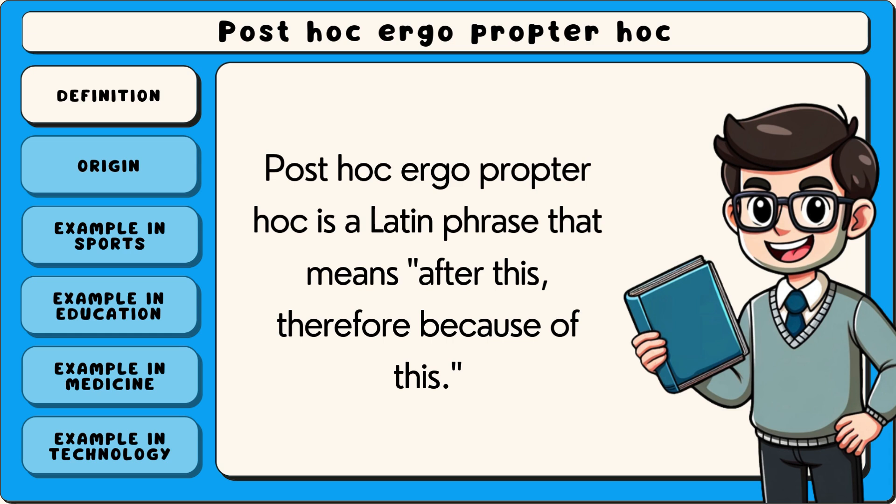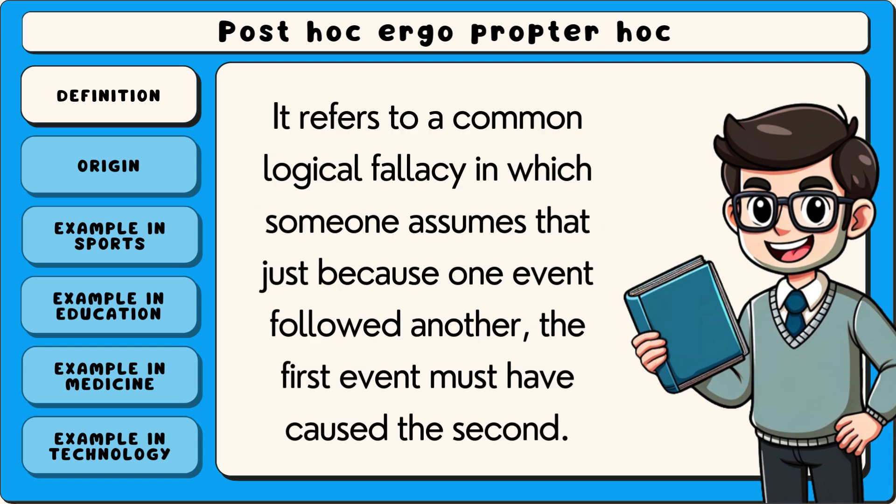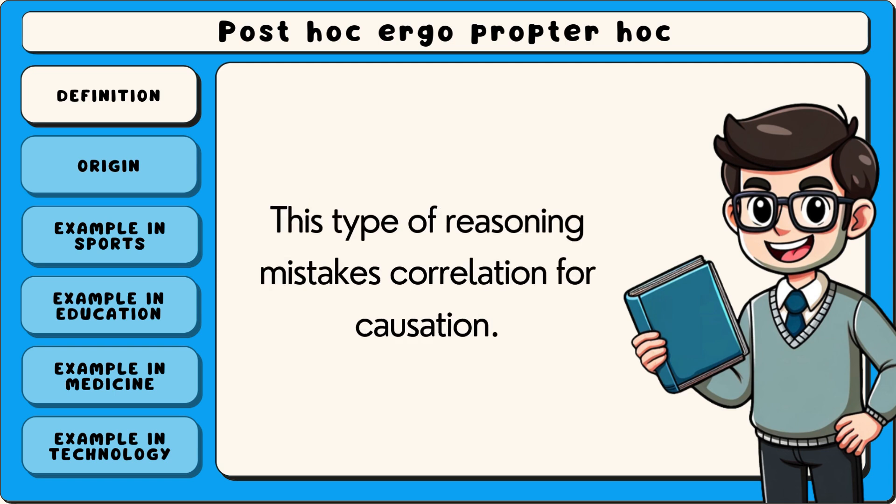Post hoc ergo propter hoc is a Latin phrase that means 'after this, therefore because of this.' It refers to a common logical fallacy in which someone assumes that just because one event followed another, the first event must have caused the second. This type of reasoning mistakes correlation for causation.